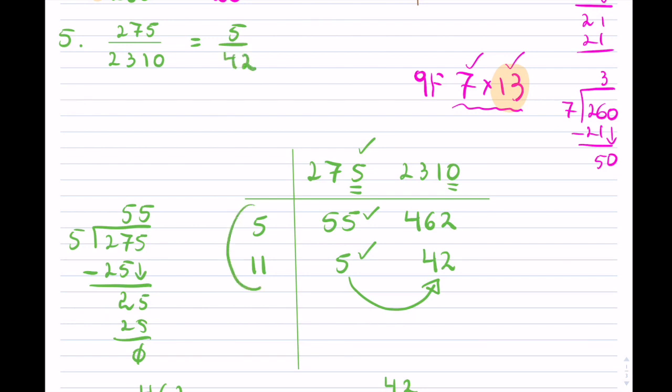5 is prime, and notice that 5 does not go into 42, so I stop. My answer here is 5 over 42, where the two primes that worked were 5 and 11. You can test yourself on these in reducing fractions — remember, it's all about primes.